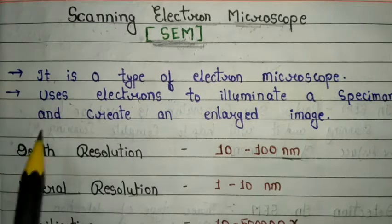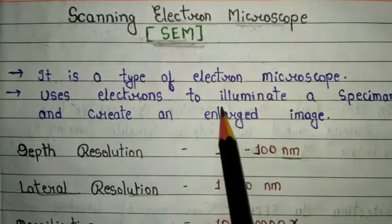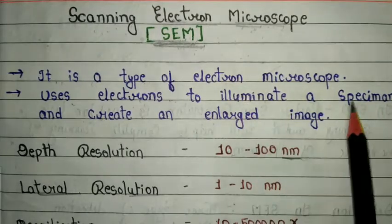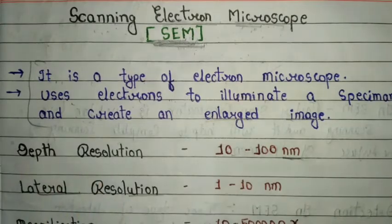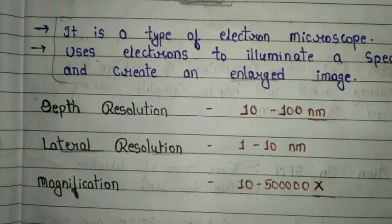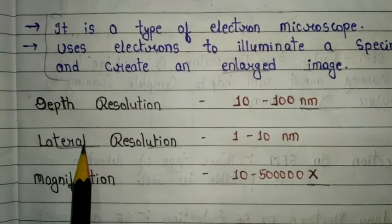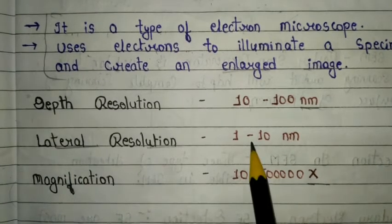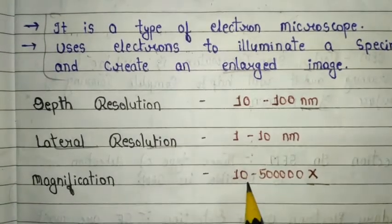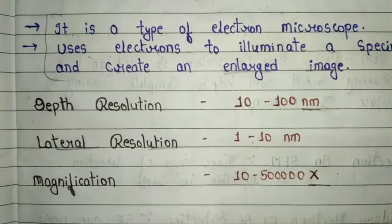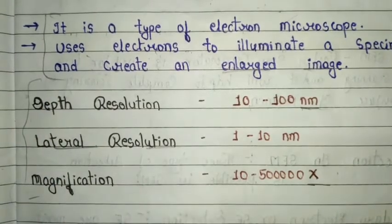The basic introduction of SEM: it is a type of electron microscope that uses electrons to illuminate a specimen and create an enlarged image. The depth resolution of SEM is 10 to 100 nanometers, lateral resolution is 1 to 10 nanometers, and magnification power is 10 to 5 lakh x. These are the basic important points about scanning electron microscope.